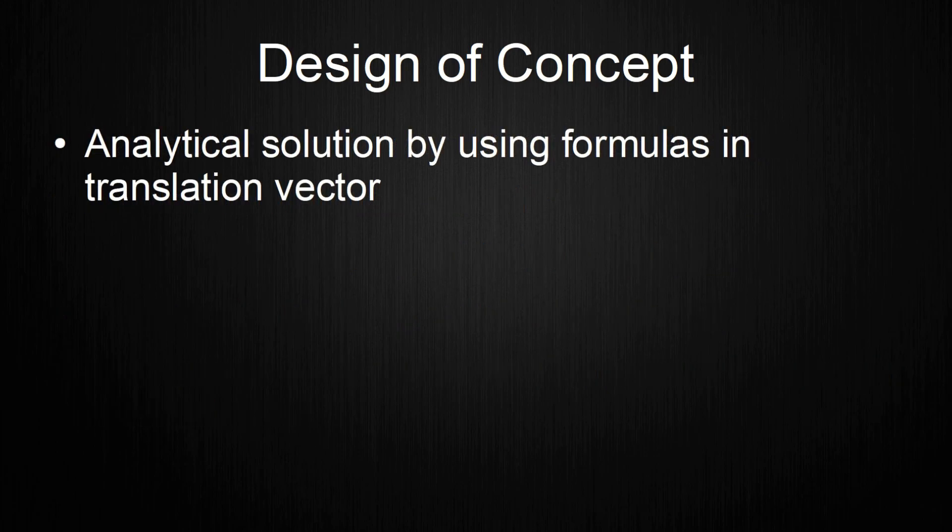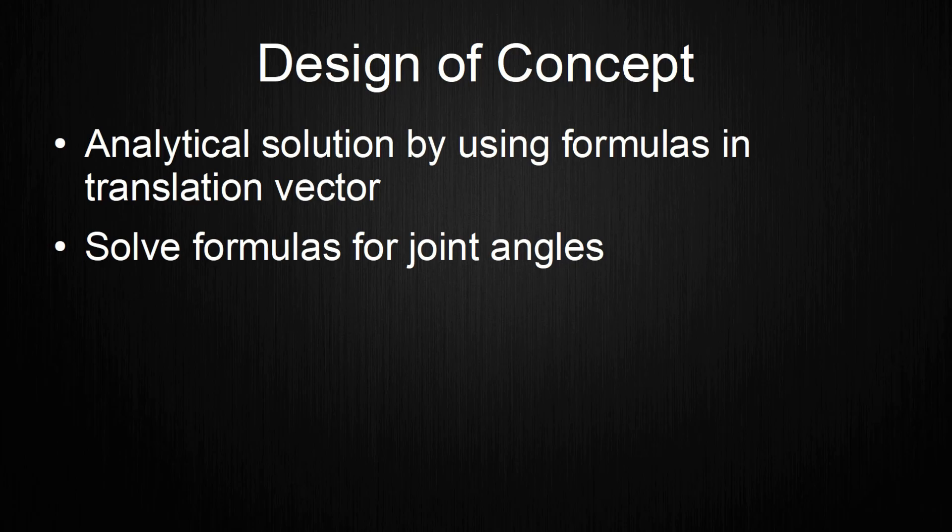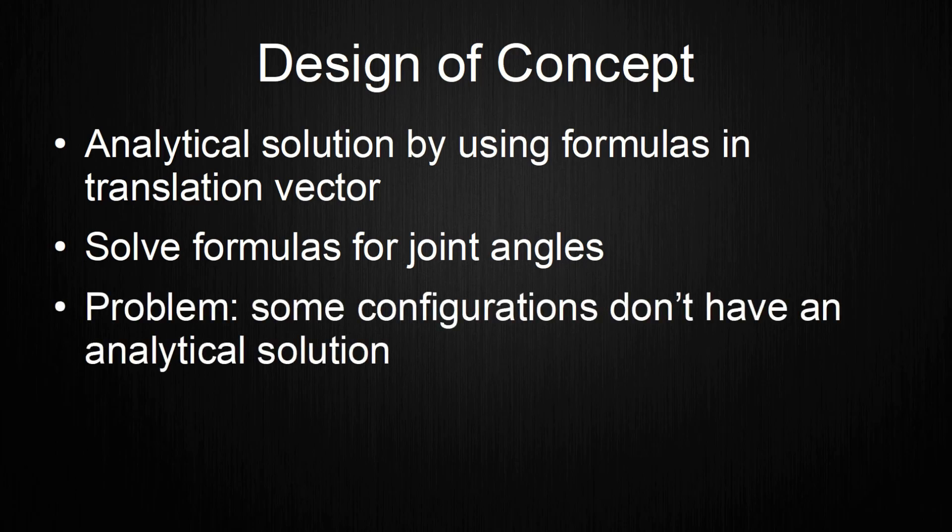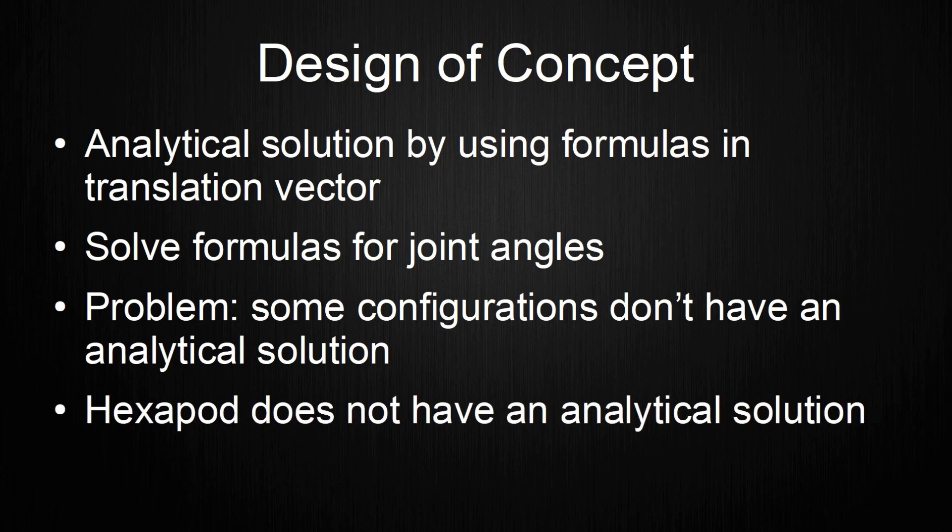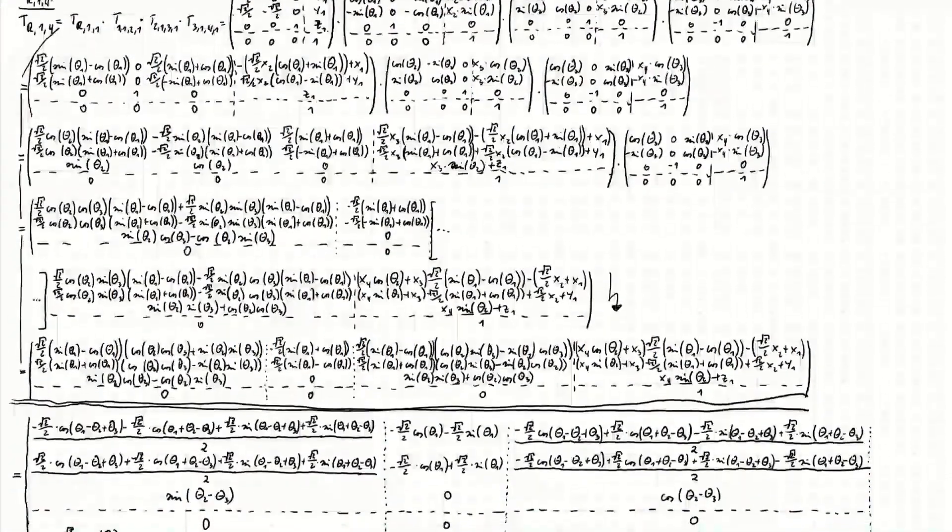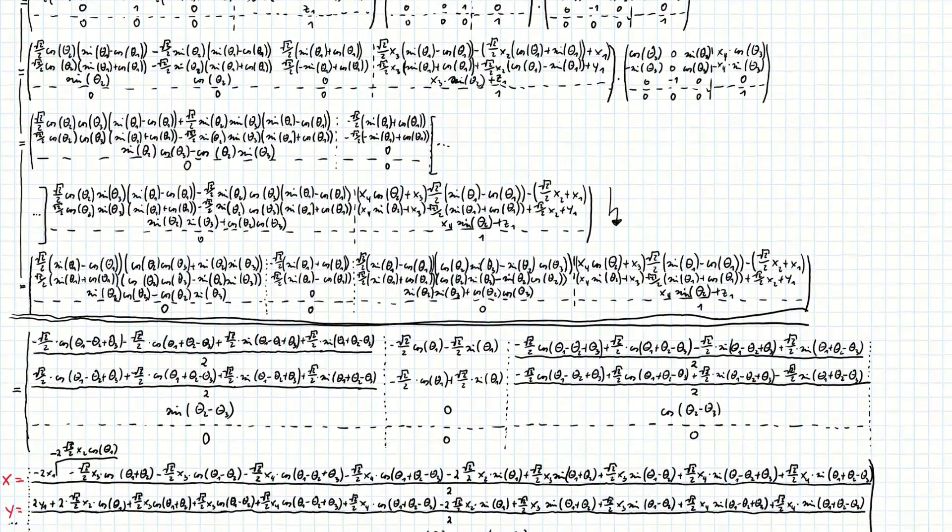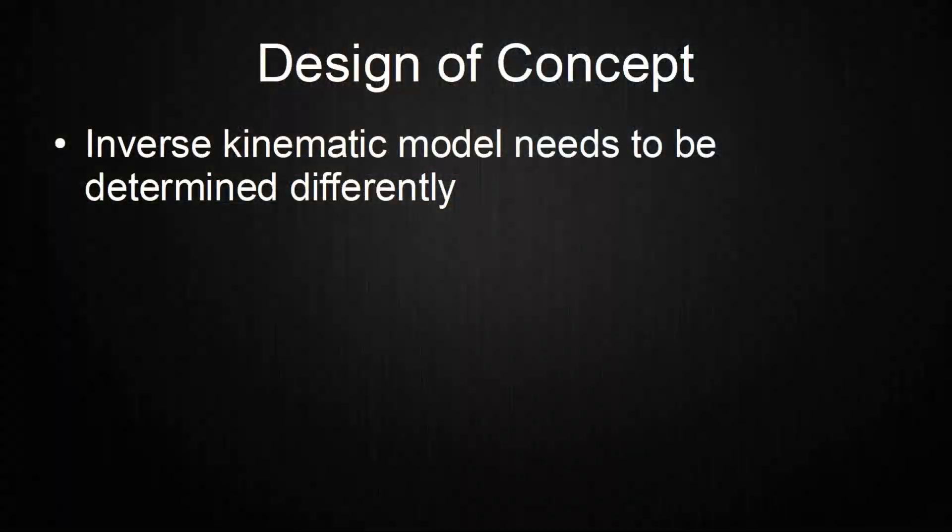To get to the analytical solution, you take the formulas in the translation vector and solve them for the joint angles. The problem with this approach is that for some configurations, there won't be an analytical solution. In case of my hexapod, this is true. I first tried to solve it by hand, which did not end well. I used the MATLAB symbolic solver to try to solve the equations from my DH transforms, but no luck. This means that I need to find another solution for an inverse kinematic model.